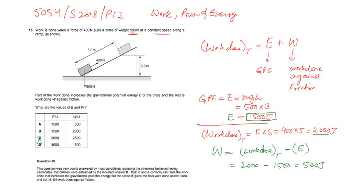Work is done when a force of 400 Newton pulls a crate of 500 Newton at a constant speed along a ramp as shown. Here is the ramp and the box which is having 500 Newton is being pulled up throughout the ramp and gains a height of 3 meters. Part of the work done increases the gravitational potential, so work which is done on the crate.